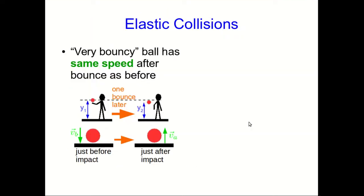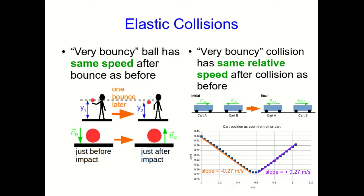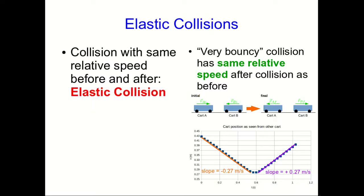Relative speed is the tool we need. In analogy, a very bouncy ball has the same speed after the bounce as before. But as we've already seen with the carts colliding, we actually see it in our data: a very bouncy collision like the magnetic interaction between the carts has the same relative speed after the collision as it does before. We're going to call this a collision with the same relative speed before and after an elastic collision.